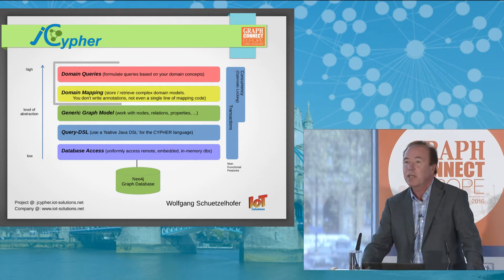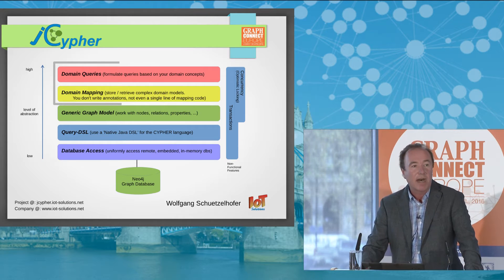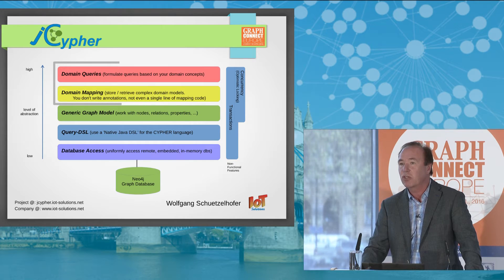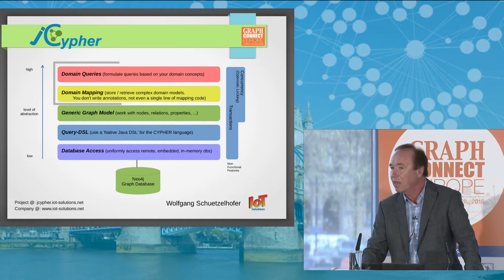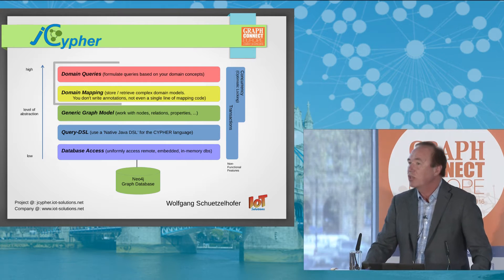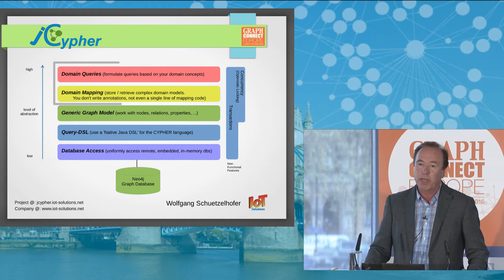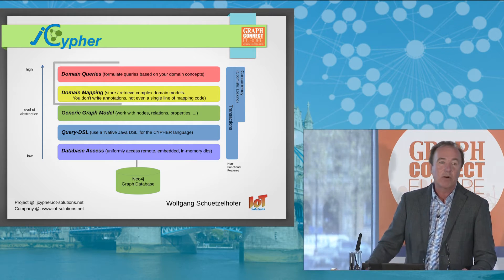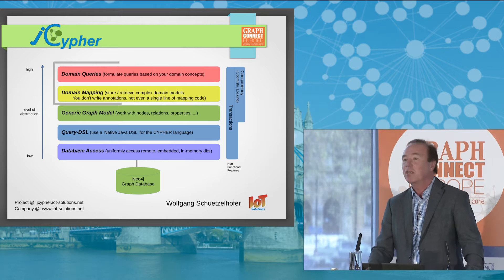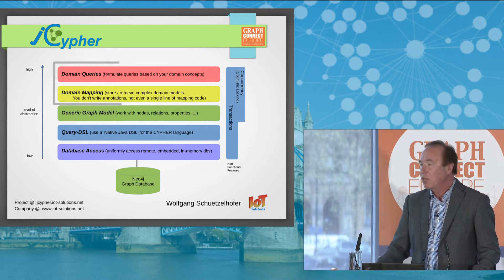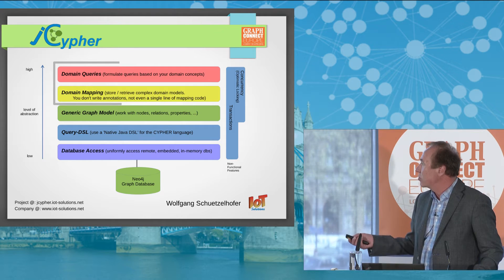Consequently, the question arises: are there more levels of abstraction that make sense? And the answer is yes. The next level of abstraction is to take an arbitrarily complex graph of Java objects — POJOs, plain old Java objects, let's call them domain objects — and store it to the graph database for later retrieval. In jCypher, this level of abstraction is called domain mapping.